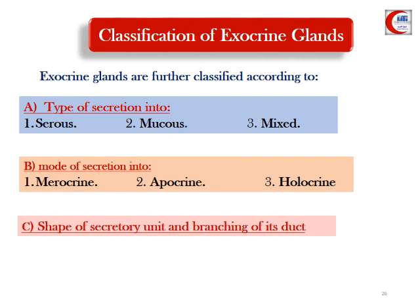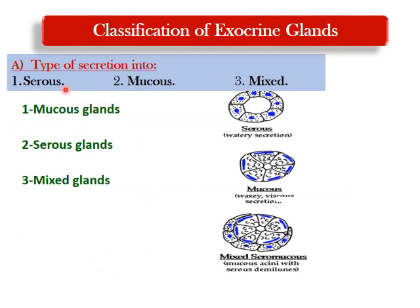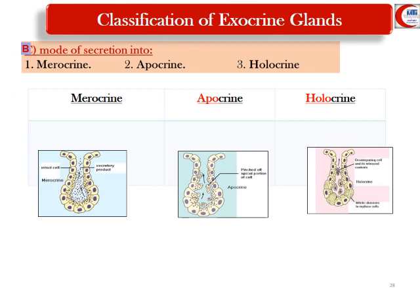Exocrine glands are classified in three ways: by the type of secretion produced — serous (watery, enzyme-rich), mucous (viscid/thick), or mixed; by the mode of secretion; and by the shape of the secretory unit and branching of the ducts. Mucous glands produce thick, viscid secretion; serous glands produce watery secretion rich in enzymes; mixed glands produce both.